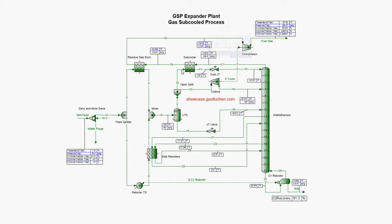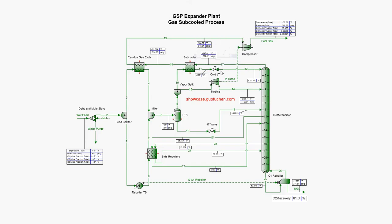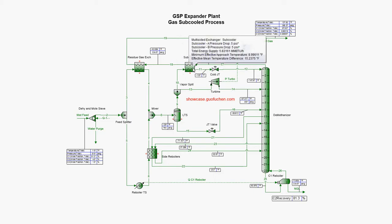The other portion of the gas is introduced to the subcooler before expanding to the demethanizer through the cold JT valve — this is why the process is called the gas subcooled process. With this subcooler, the ethane recovery can be greatly enhanced. As you can see, the lowest temperature of negative 148°F is created at the outlet of the cold JT valve.